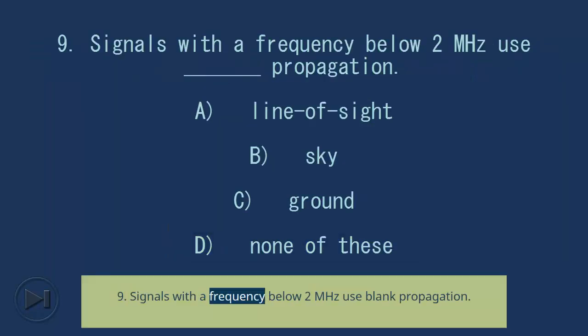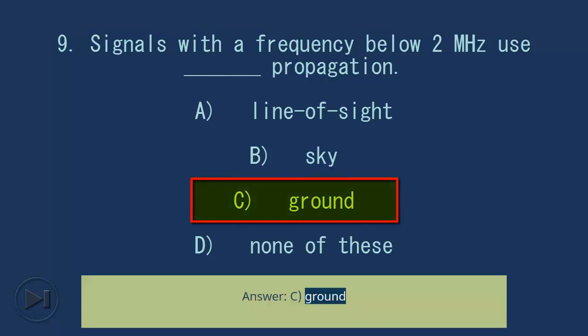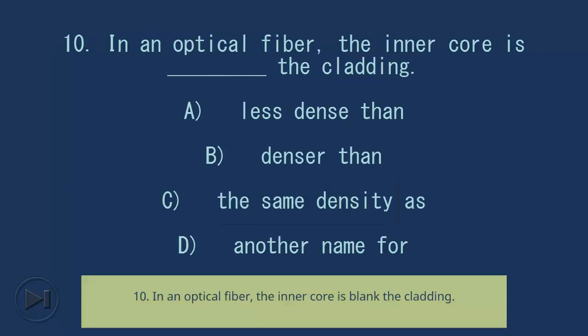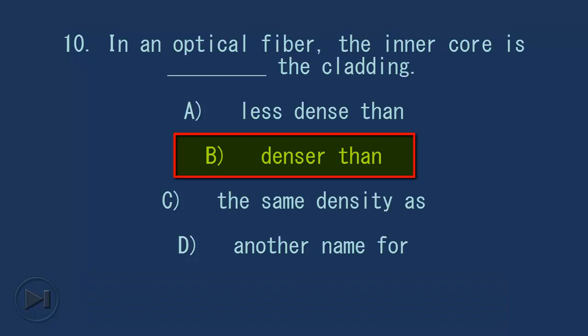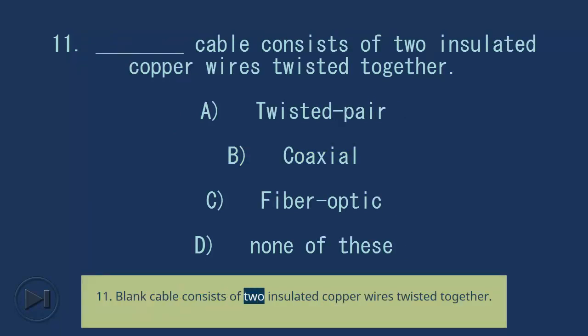Question 9: Signals with a frequency below 2 megahertz use blank propagation. A) line of sight, B) sky, C) ground, D) none of these. Answer: C, ground. Question 10: In an optical fiber, the inner core is blank the cladding. A) less dense than, B) denser than, C) the same density as, D) another name for. Answer: B, denser than.